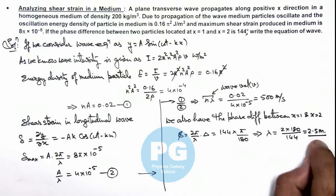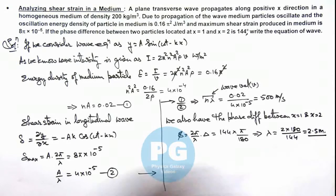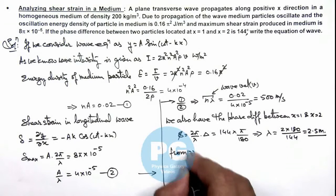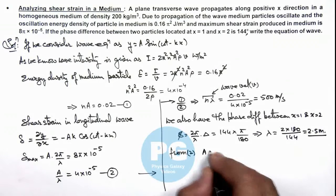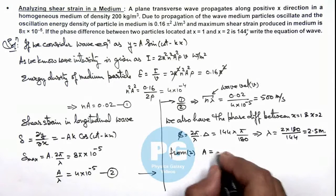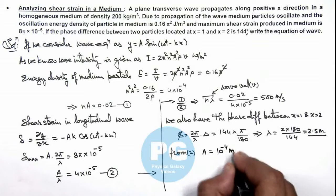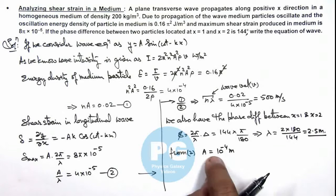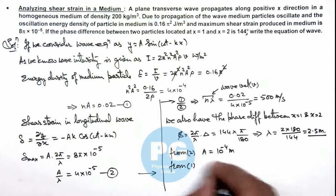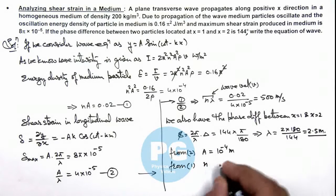From equation 2 you can write the value of amplitude is equal to, as lambda is 2.5, this is 10^-4 meter. And as we have got the value of amplitude from equation 1, we get the frequency, which is 200 hertz.